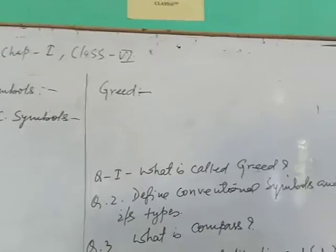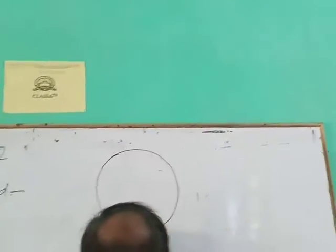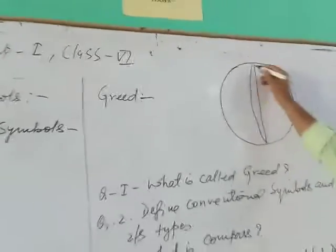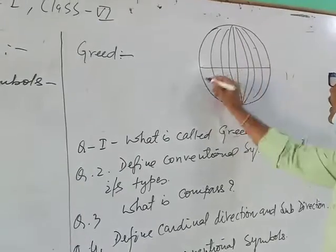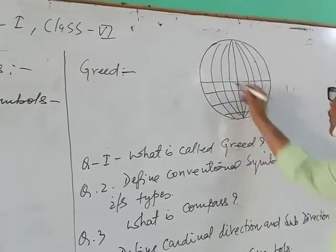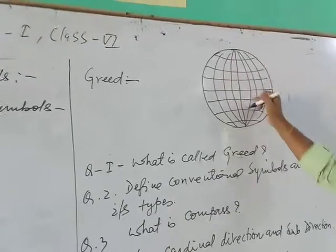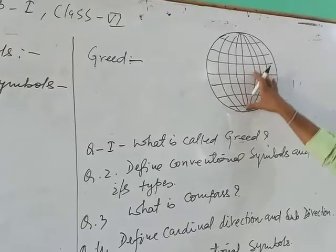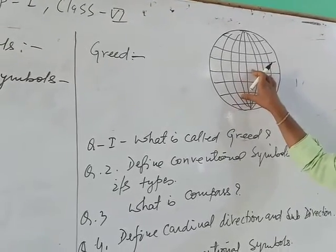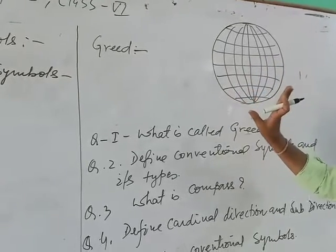Second question, that is the grid. As you know that on the earth, on a globe, some longitudinal and latitudinal lines are drawn there. So, these latitudinal lines, which run from east to west or west to east, and longitudinal lines that run from north pole to south pole, together these latitudes and longitudes form a grid, form a net. That net of latitude and longitude is called grid.